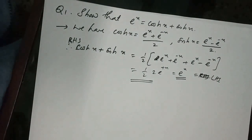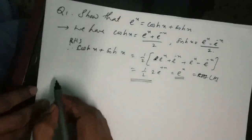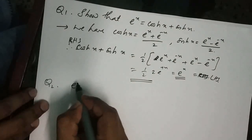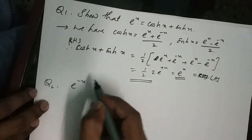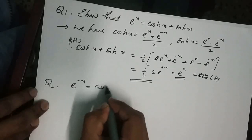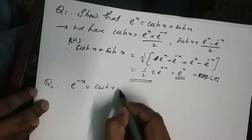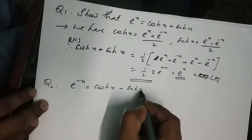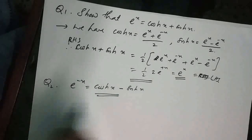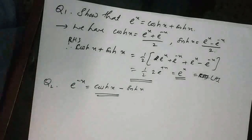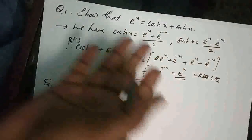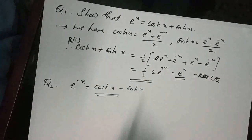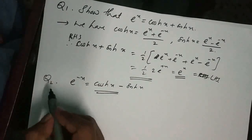In a similar way, we can also show that e^(-x) = cosh(x) - sinh(x). You can do it easily in the same manner. Try to do this.